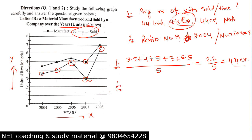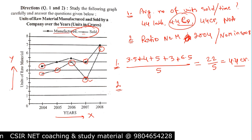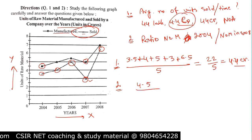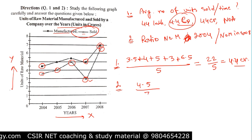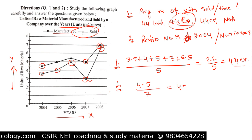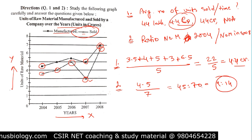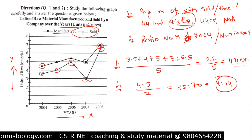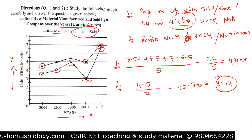For Question 2, reading manufactured units from the graph: in 2004 it is approximately 4.5, and in 2008 it is approximately 7. So the ratio is 4.5:7, which simplifies to 45:70 or 9:14. The answer is 9 is to 14.